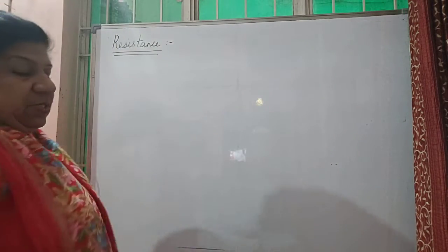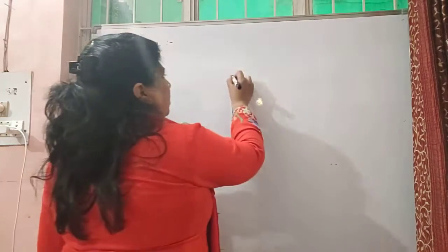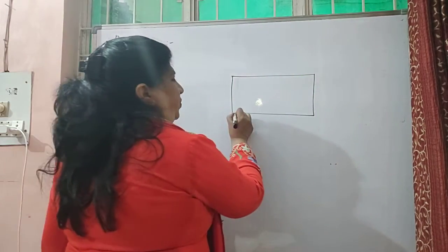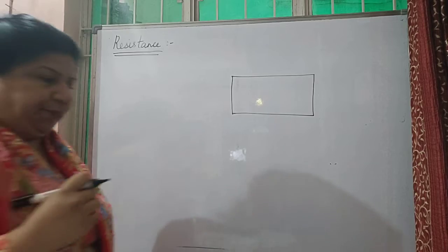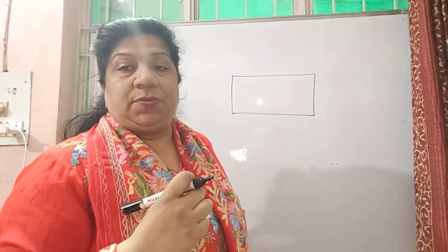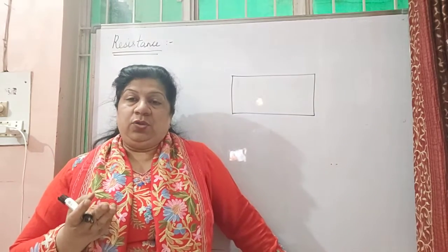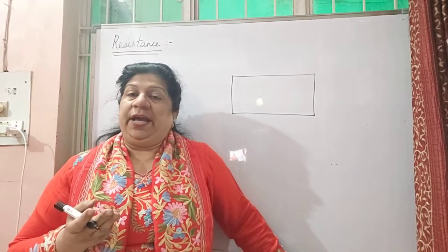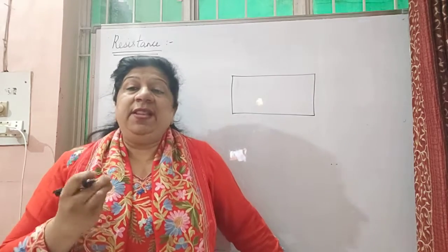Now we are talking about resistance. Before we come to the concept of resistance, let us see one thing. Suppose we have any body here — any conductor. You can say the current flows through a body, and good conductors are those which allow the current to flow through it. Now current will flow when there will be a motion of electrons.